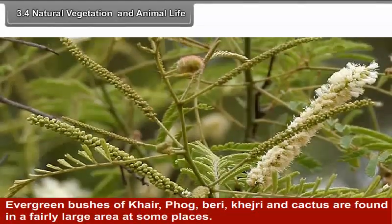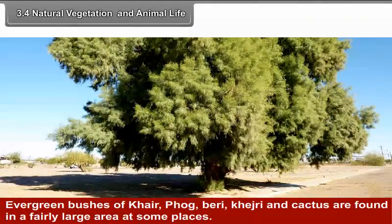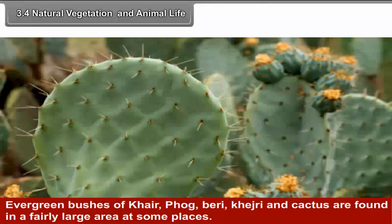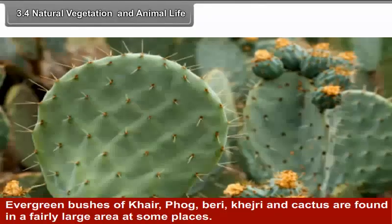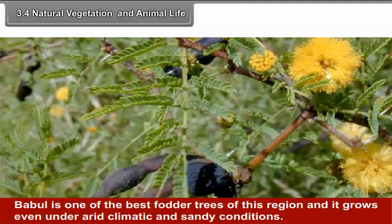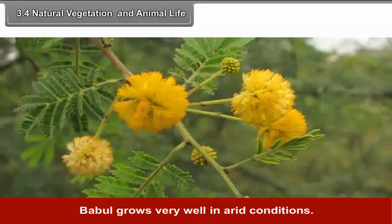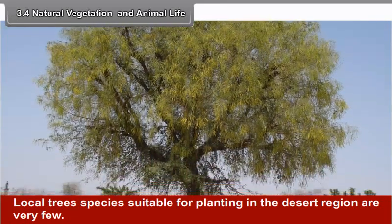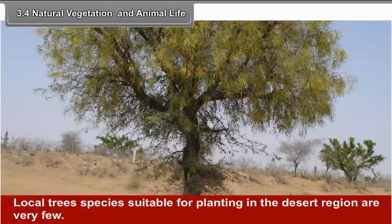Evergreen bushes of kher, fog, peri, cachery and cactus are found in a fairly large area at some places. Babul is one of the best fodder trees of this region and grows even under arid climatic and sandy conditions. Local tree species suitable for planting in the desert region are very few.